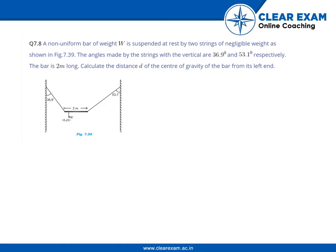Welcome back. Let us go through the question. A non-uniform bar of weight W is suspended at rest by two strings of negligible weight as shown in the following figure. The angles made by the strings with the vertical are 36.9 degrees and 53.1 degrees respectively. The bar is 2 meters long. Calculate the distance d of the center of gravity of the bar from its left end.